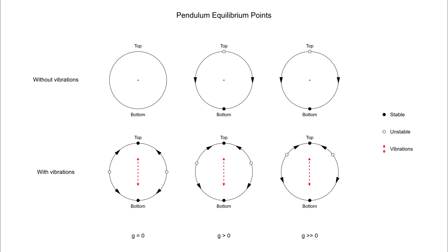But it's the vibrations that change the number of stable and unstable equilibria. Gravity simply changes where the unstable points are located at.